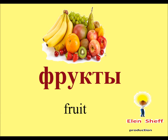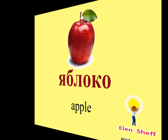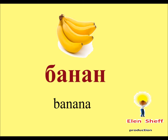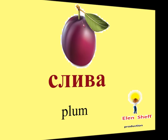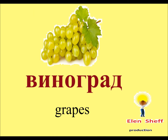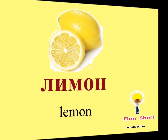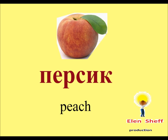Now let's look at фрук-ты. Фрукты. How do we call fruit? Яб-ло-ко. Яблоко. Ба-нан. Банан. Easy. Груша. Слива. Виноград. Лимон. The same in English. Персик.